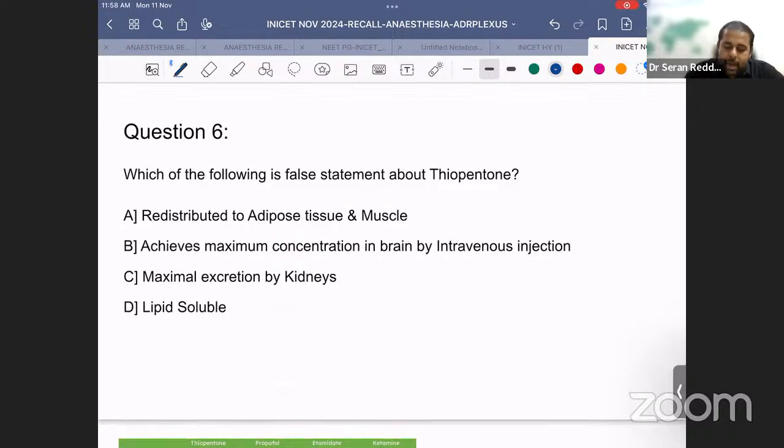The last question: Which of the following is a false statement about IV induction agents? Don't forget they are asking about the false statement. Redistributes to adipose tissue in most people - yes, this is a true statement. All IV anesthetics redistribute. Thiopentone has major redistribution - 90% redistribution and achieves maximum concentration in brain by intravenous injection. The name itself says they are intravenous induction agents with arm-brain circulation of 15-30 seconds. Maximal excretion by kidneys - we will come back to this. Lipid soluble - all IV induction agents are lipid soluble so they can cross and react with the brain. Even inhalation agents. So it's a true statement.